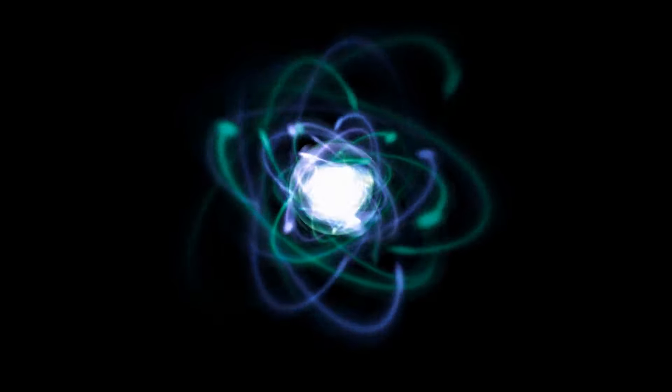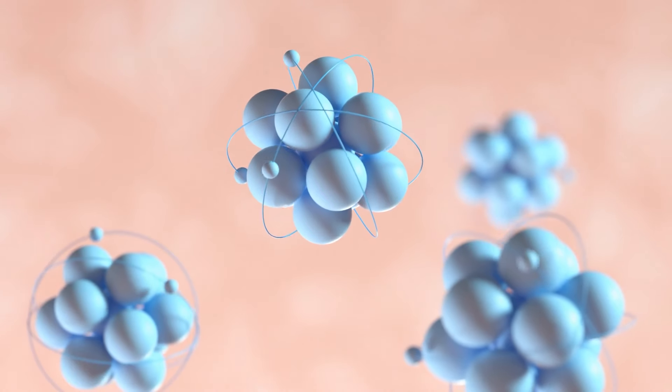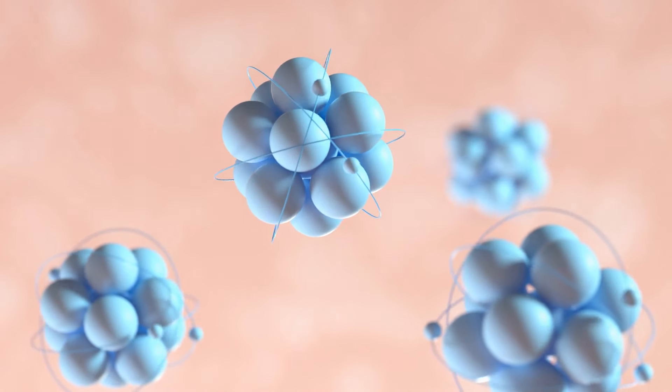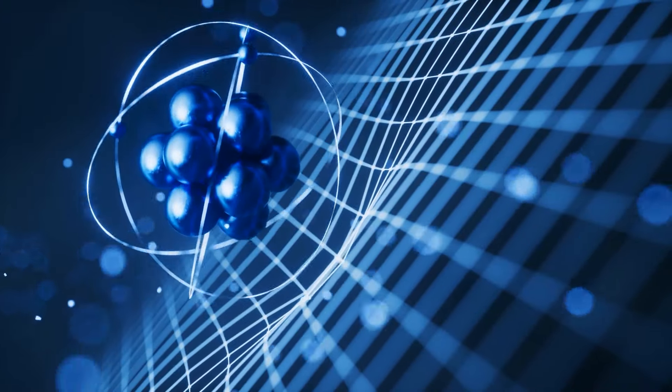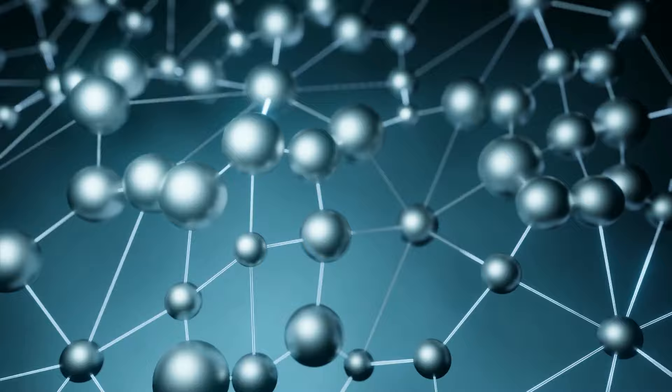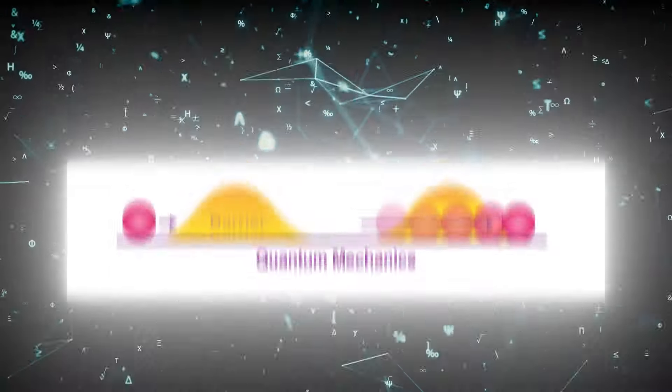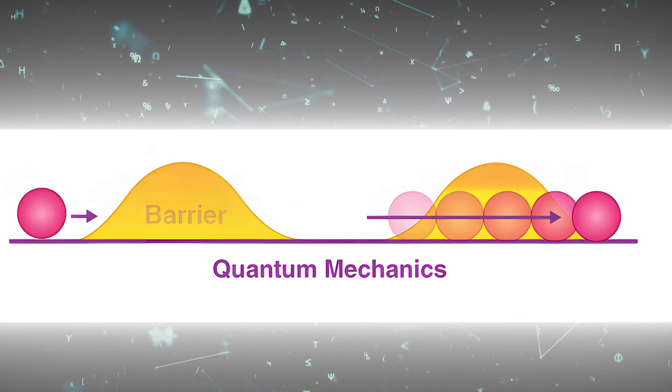At the heart of quantum tunneling is the wave-particle duality of matter. Electrons, protons, and even larger particles exhibit both particle and wave characteristics. When these particles encounter a barrier, their wave functions, which describe the probability of finding a particle in a certain location, can extend through the barrier. This allows for the possibility of the particle appearing on the other side as if it tunneled through.